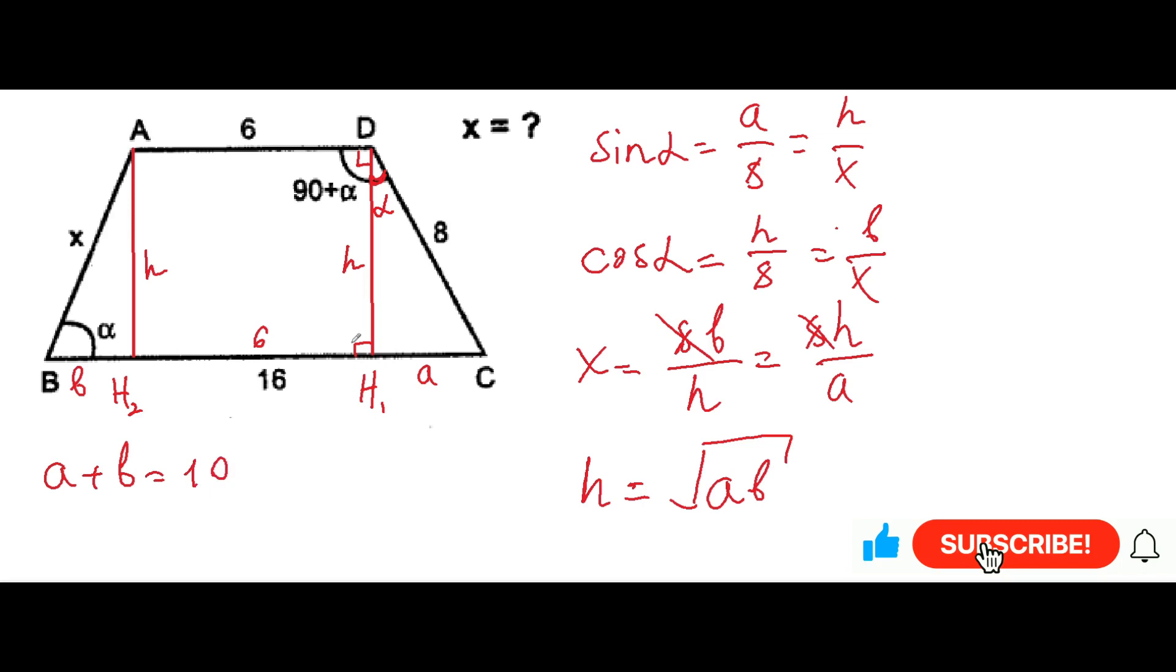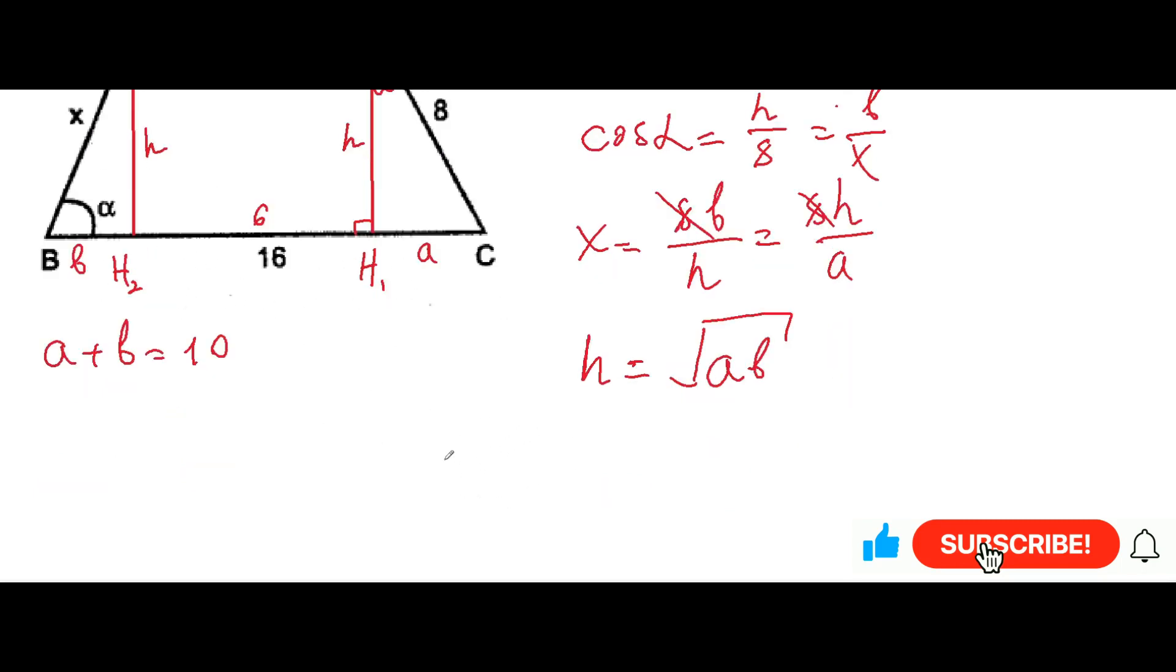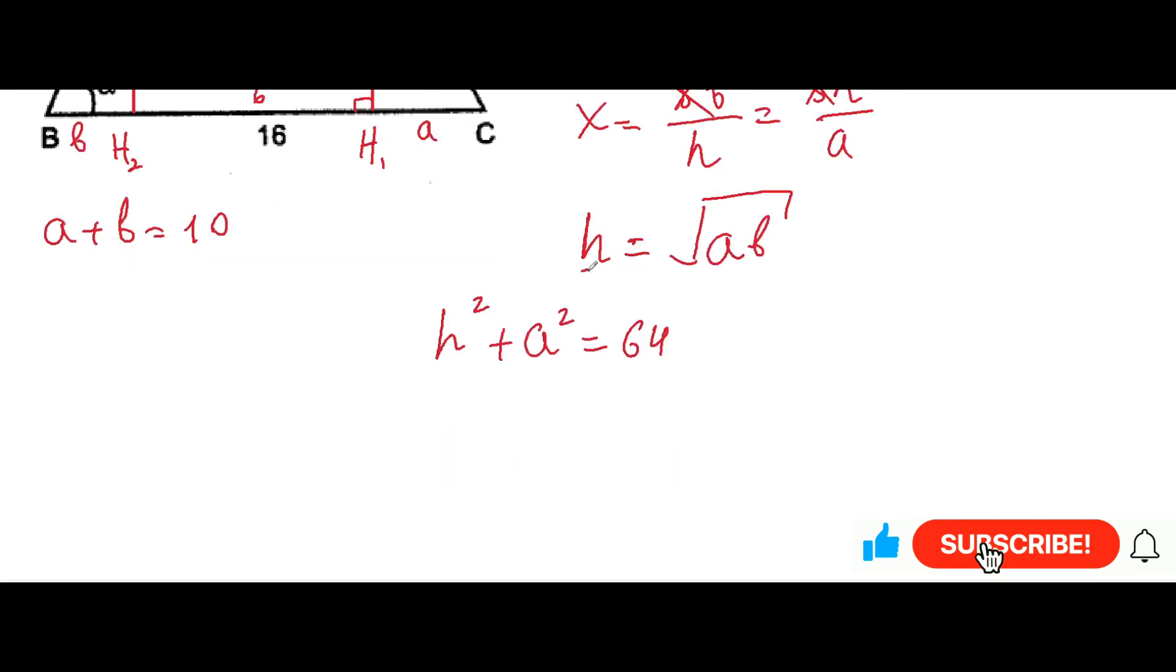Now, the next step is to write down the Pythagorean theorem for the triangle dh1c or any of them. So here a squared plus h squared will be equal to 64. Which means that if we plug in the square root of ab, we can get that ab plus a squared will be equal to 64.